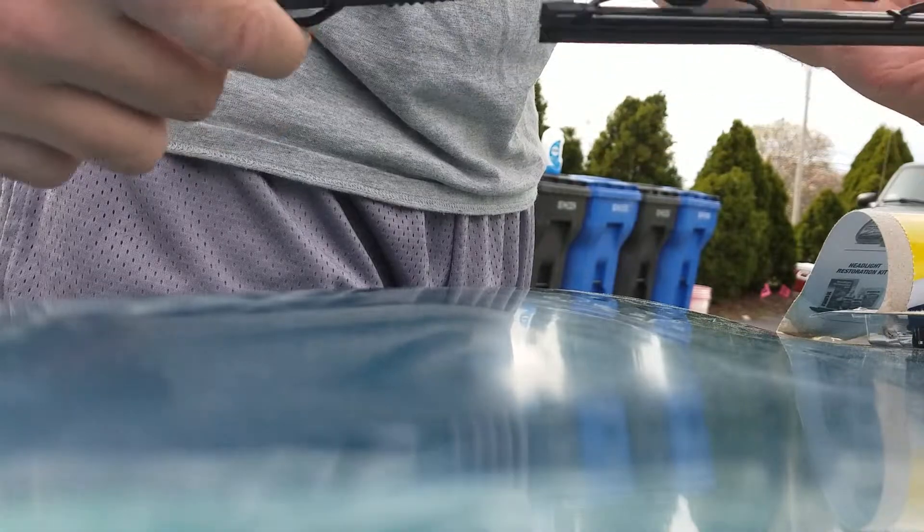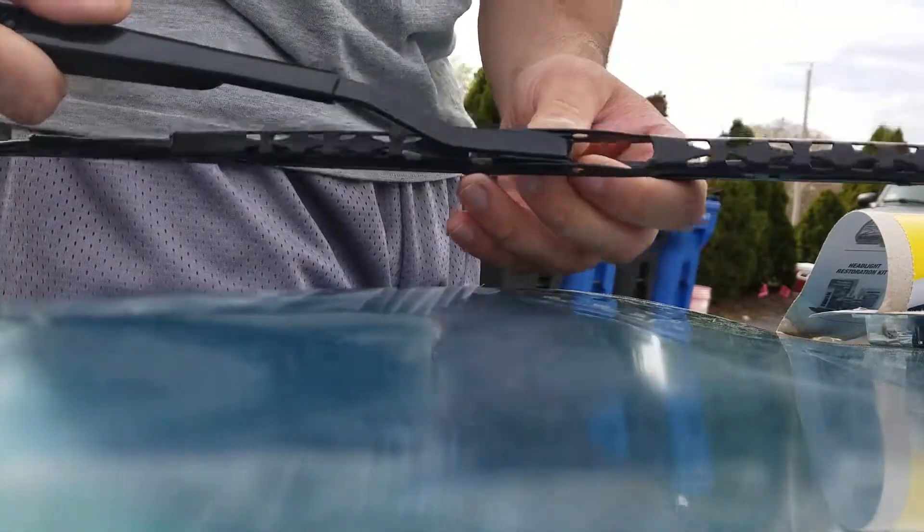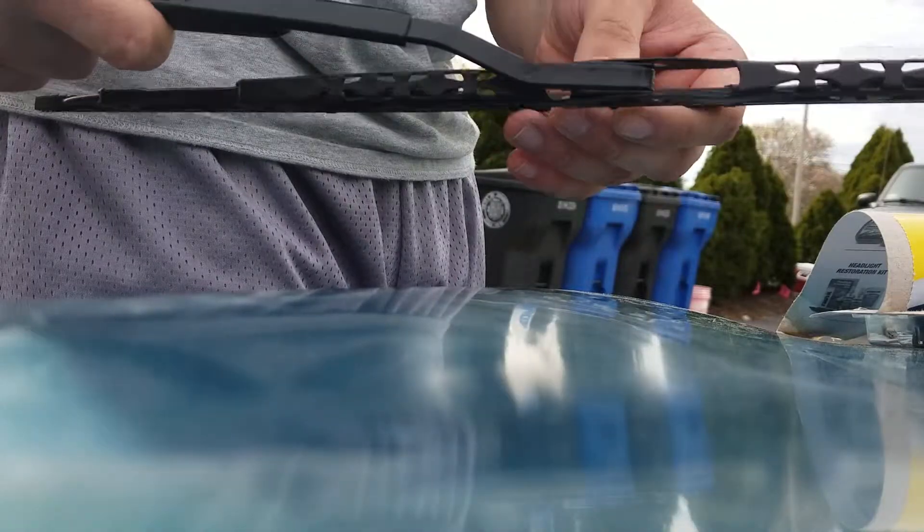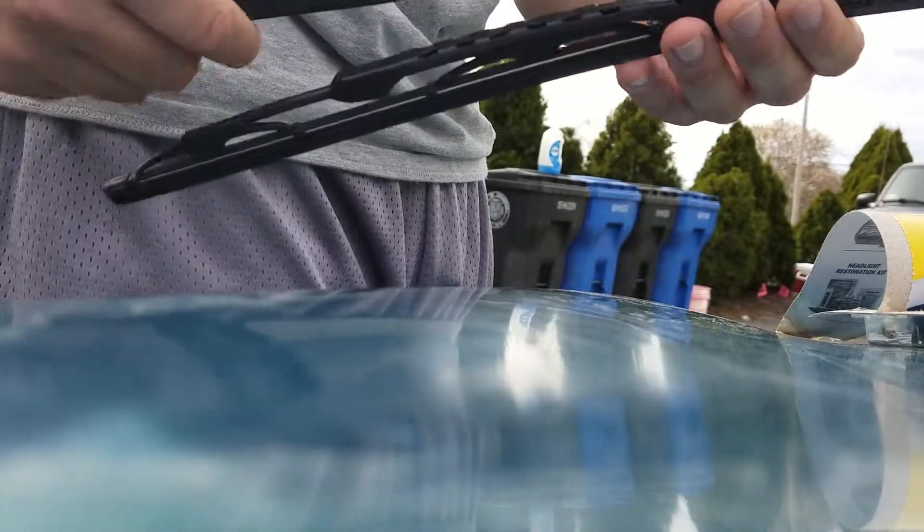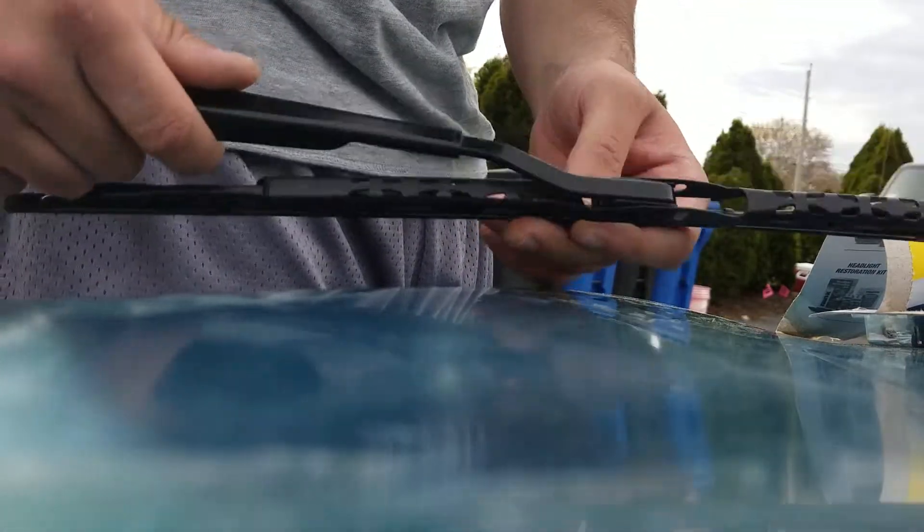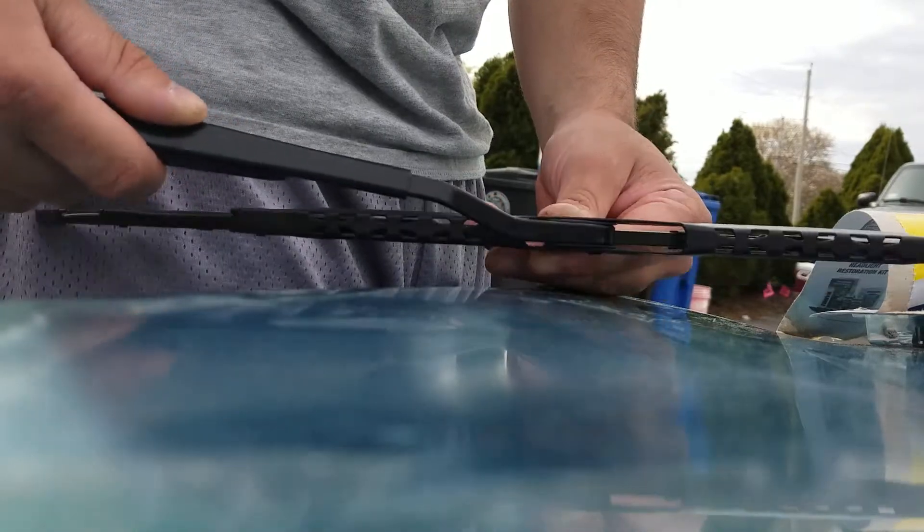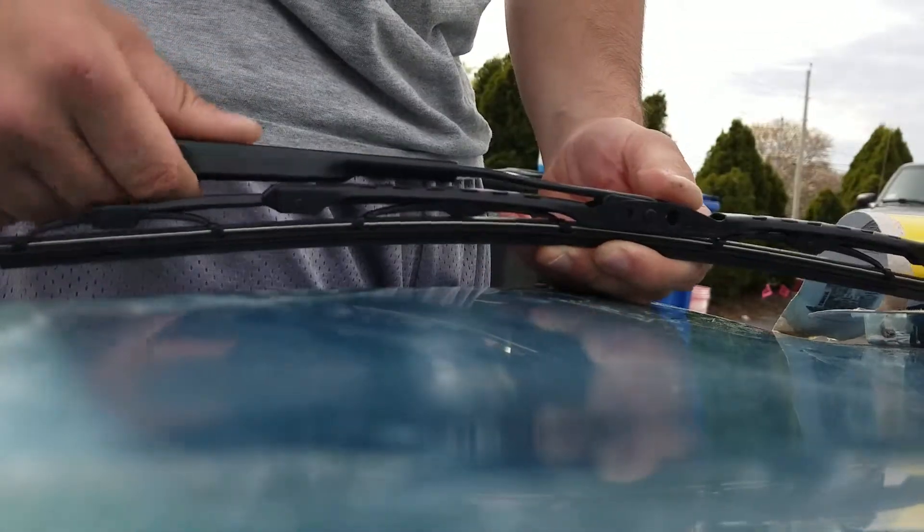Mine's off the car right now so you should already be good, but this is the driver side, this is a 21 inch, the passenger side is a 20 inch blade, and the rear is like a 17 or something like that, so there will be different size blades for each wiper side.